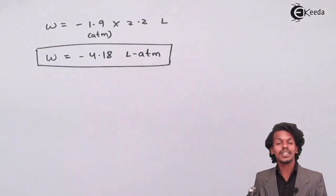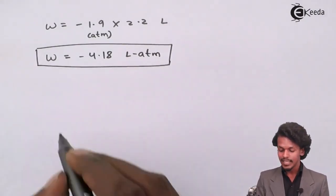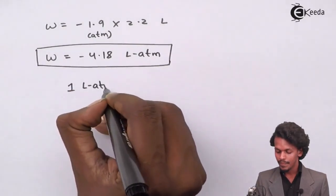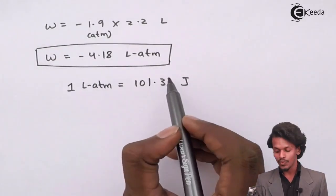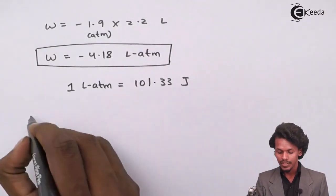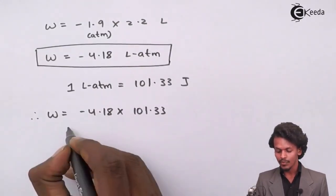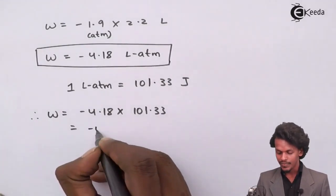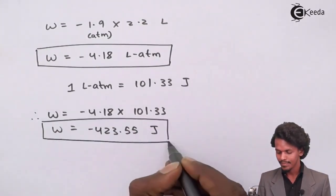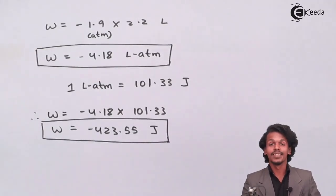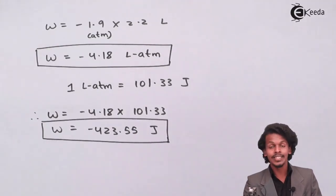They also require the work in joules. Since 1 liter-atmosphere = 101.33 joules, we multiply: W = −4.18 × 101.33 = −423.55 joules.